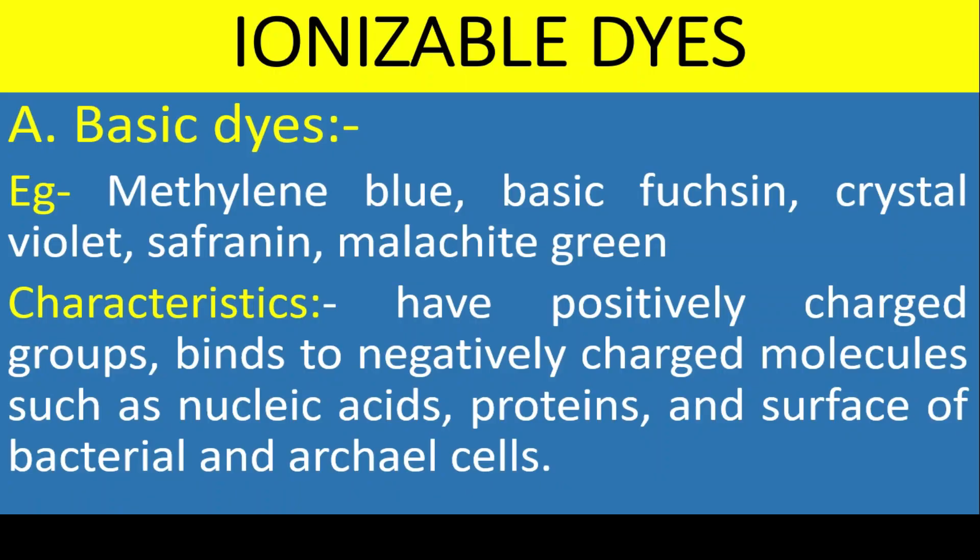According to their ionizable properties, dyes are classified into two types. Basic dyes — examples include methylene blue, basic fuchsin, crystal violet, safranin, and malachite green. Basic dyes have positively charged groups that bind to negatively charged molecules such as nucleic acids, proteins, and the surface of bacterial and archaeal cells. Basic dyes are positively charged.